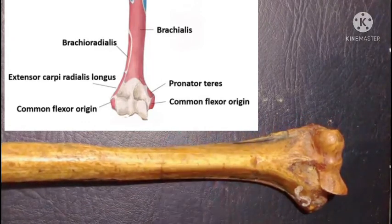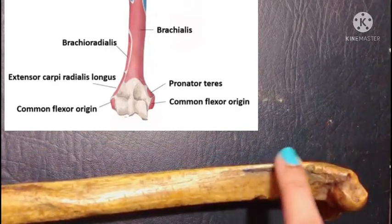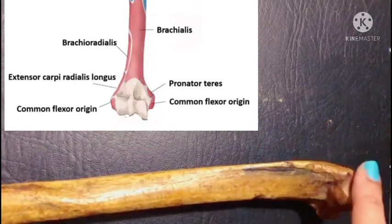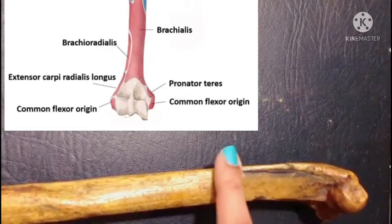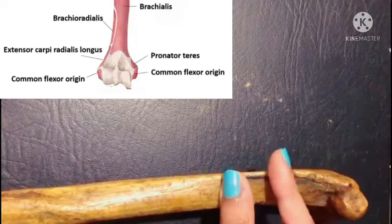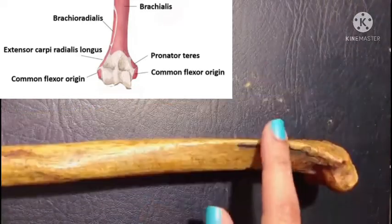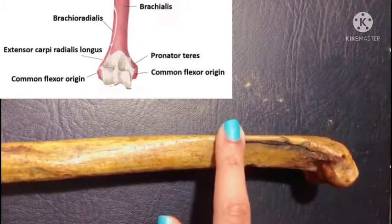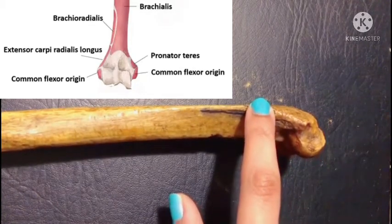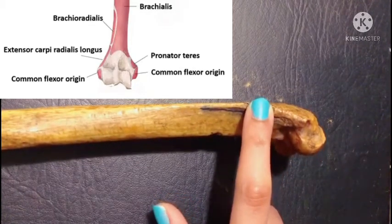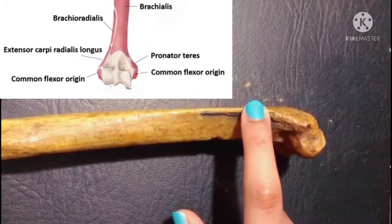Most of the origins here are muscles of the forearm. The lateral supracondylar ridge has an upper two-thirds and a lower one-third. The upper two-thirds gives origin to the brachioradialis, a muscle of the forearm. The lower one-third of the lateral supracondylar ridge gives origin to the extensor carpi radialis longus muscle.